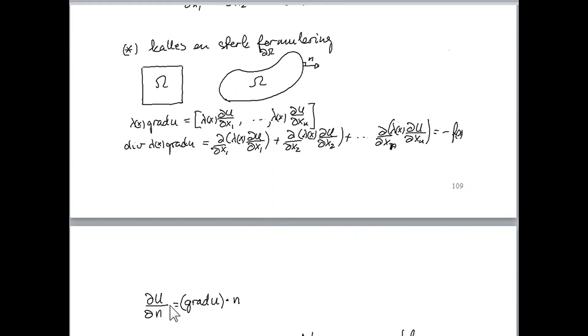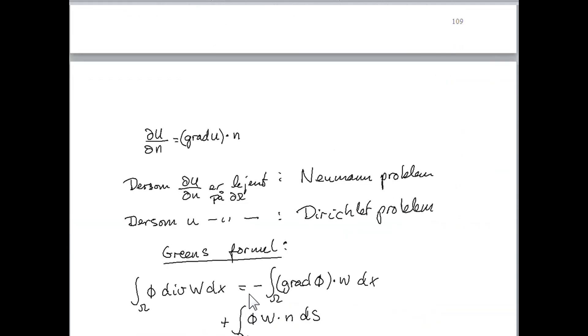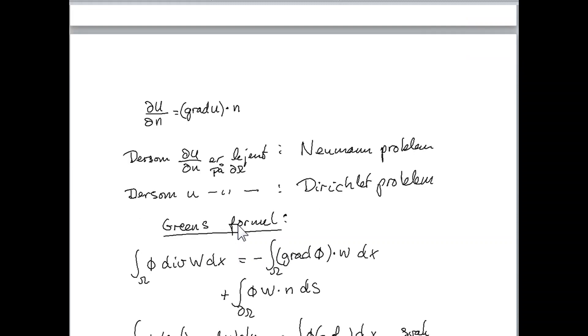So this is an interesting and important quantity, and it turns out to be equal to the gradient of u, which is a vector function multiplied with the normal vector. So in the case when this normal derivative is known on the boundary, we call the Poisson problem a Neumann problem. It's called a Dirichlet problem if u is known on the boundary. This has been discussed also in the first week.